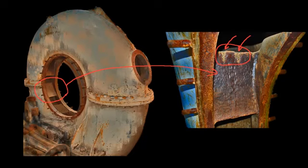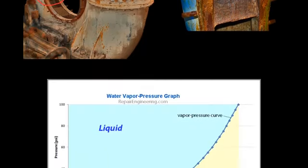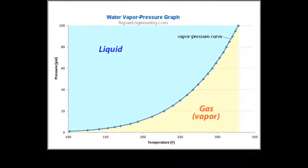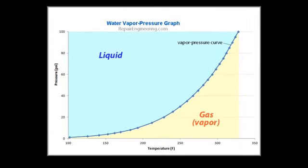In order to understand how a moving fluid can cause the type of damage that we have seen in these examples, it is helpful to review a few basics of fluid dynamics. This graph is known as a vapor pressure graph. A vapor pressure graph shows the relationship between the temperature and pressure of a fluid. This particular graph is produced from data that is specific to water. However, similar looking vapor pressure graphs are available for all fluids.